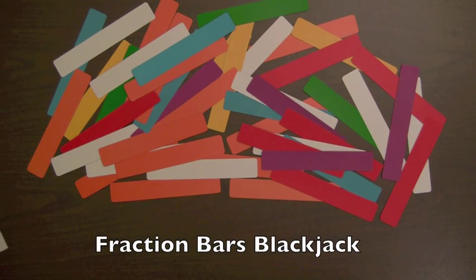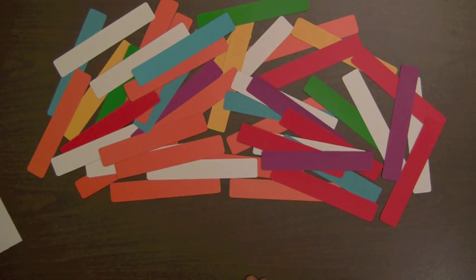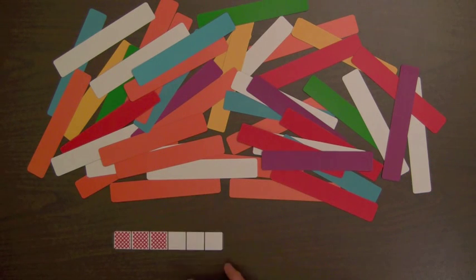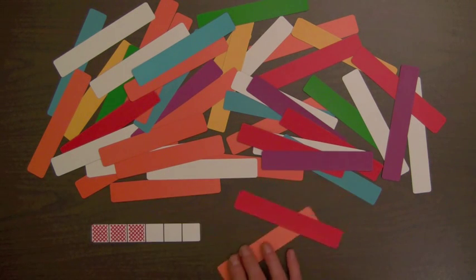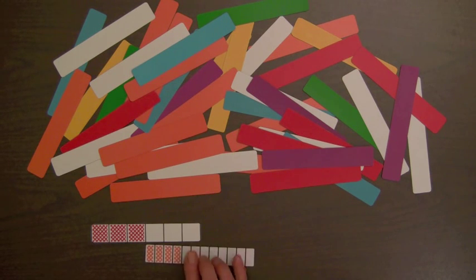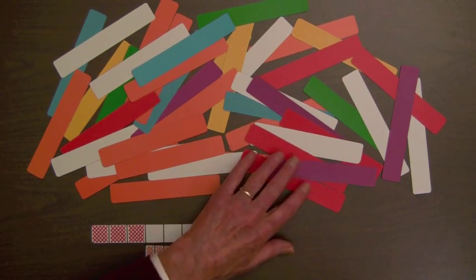Fraction bars blackjack is another game that is popular with students. The bars are spread face down. Each player takes one at a time, adding the fractions to get as close as possible to a sum of two without going over. So, for example, here's a bar that's half shaded. I have no idea what these bars are. Okay, well that's going to be almost a hole bar. I'll try this blue bar here.